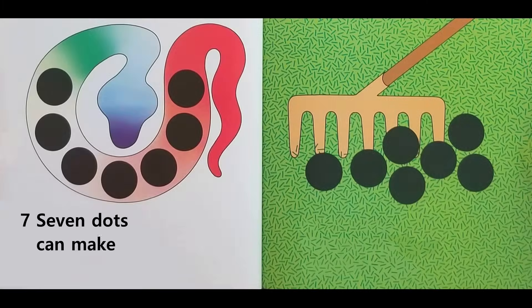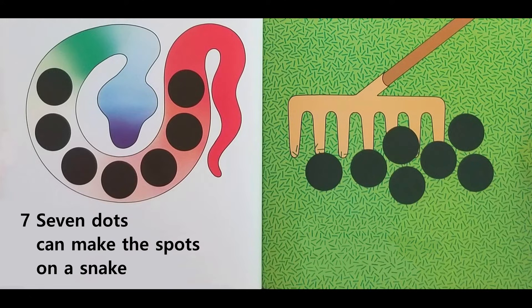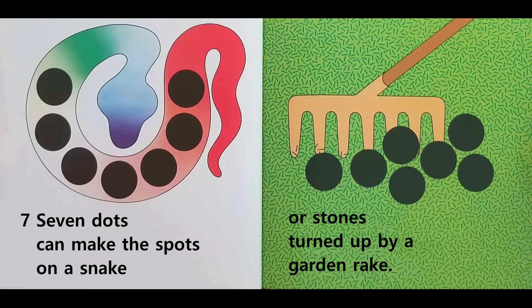Seven dots can make the spots on a snake or stones turned up by a garden rake.